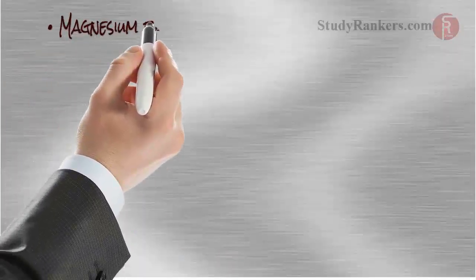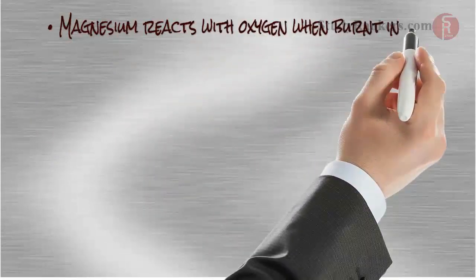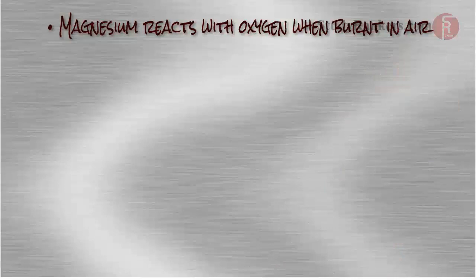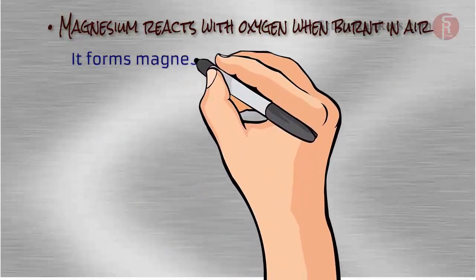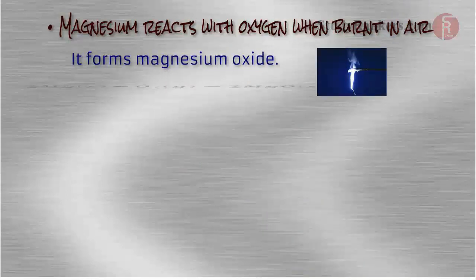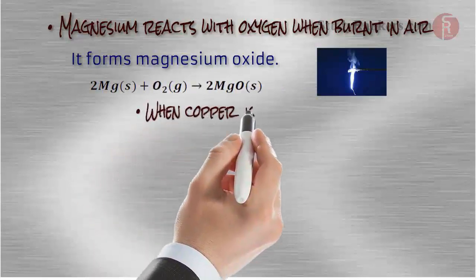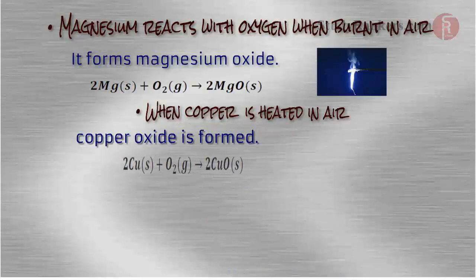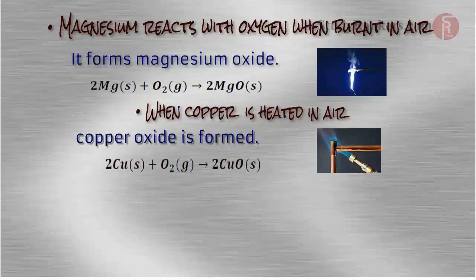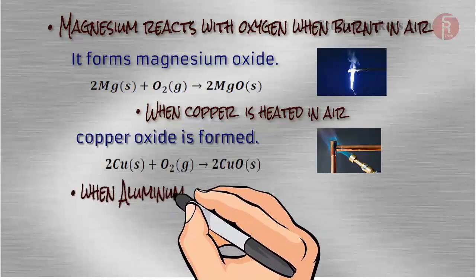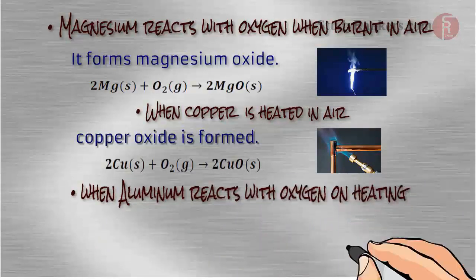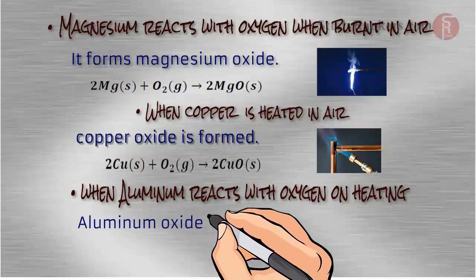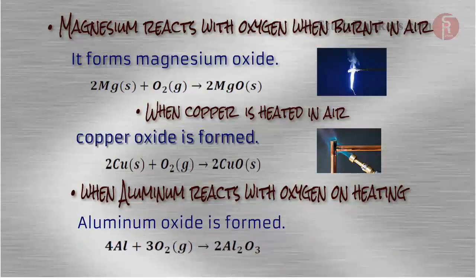Magnesium reacts with oxygen when burnt in air. It forms magnesium oxide. Here is the equation: When 2Mg react with O2, then it will give 2MgO. When copper is heated in air, then copper oxide is formed. Here is the equation: When 2Cu react with O2, then it will give 2CuO. Aluminum also reacts with oxygen on heating and aluminum oxide is formed. The equation for the reaction is mentioned here: 4Al react with 3O2, that will give 2Al2O3.